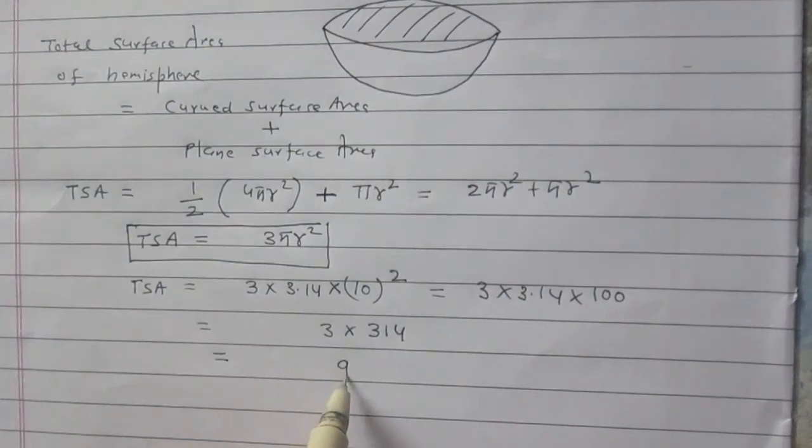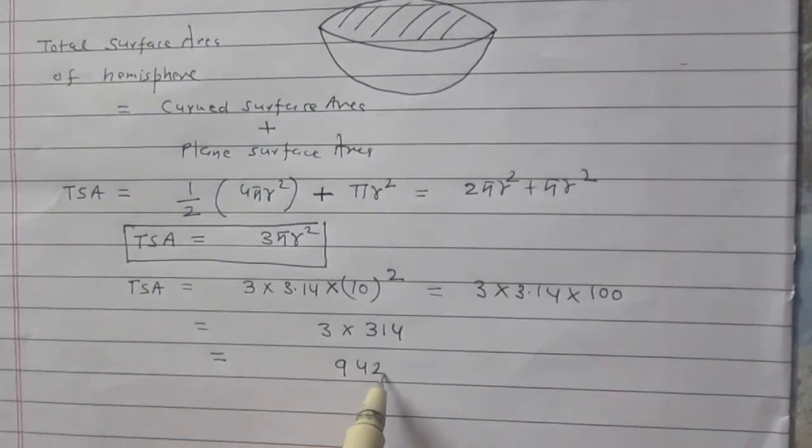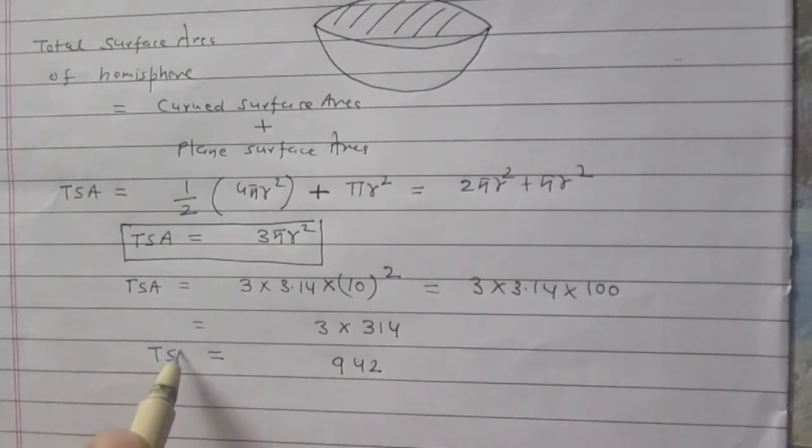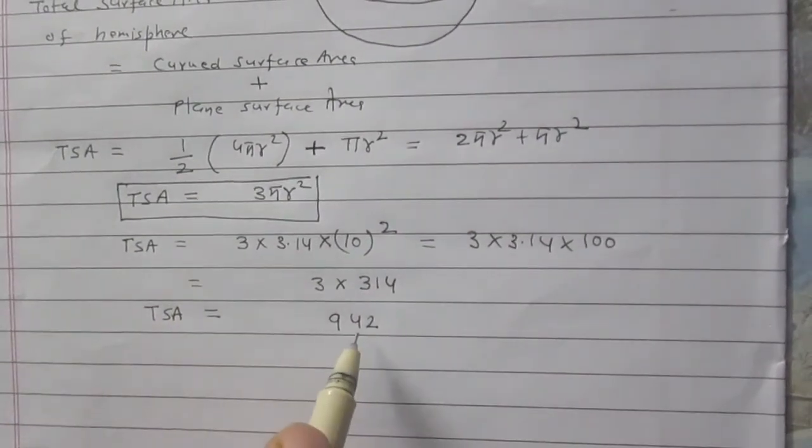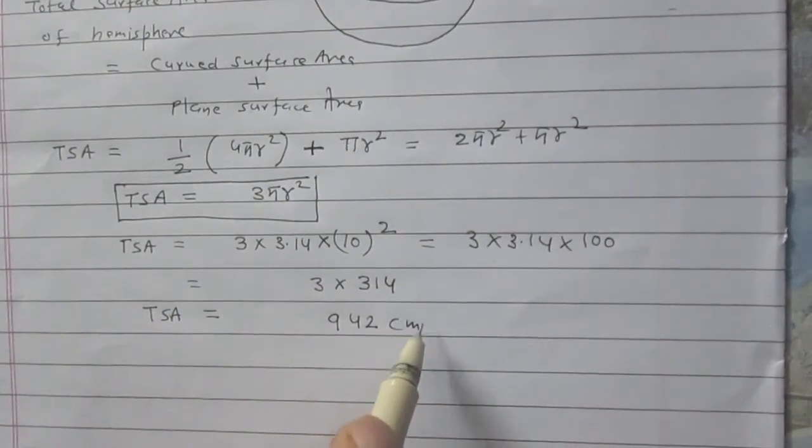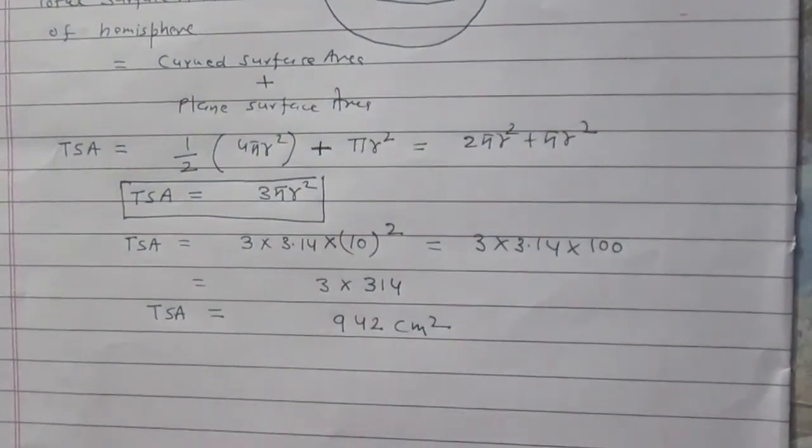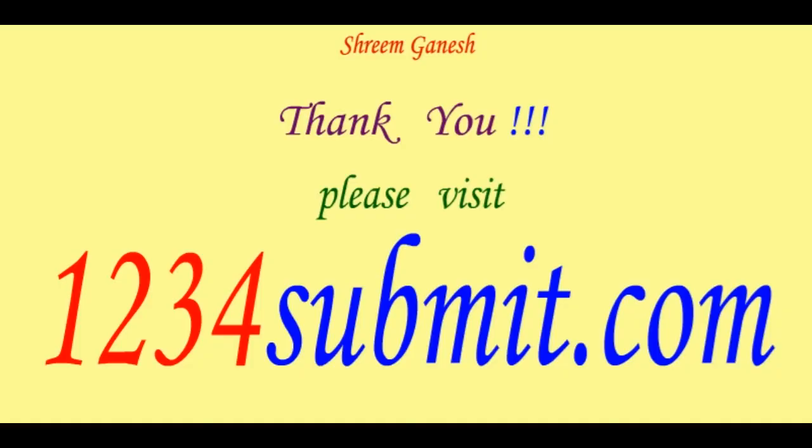Finally, we will get 942. So, total surface area of hemisphere is 942 cm².